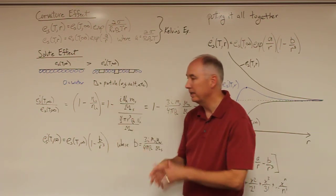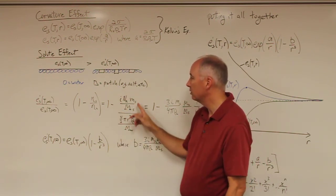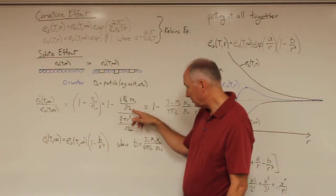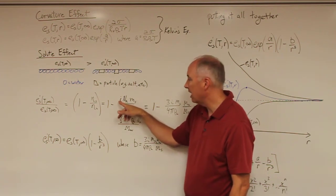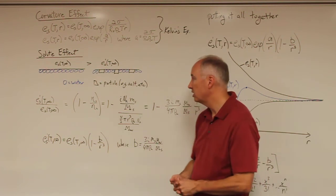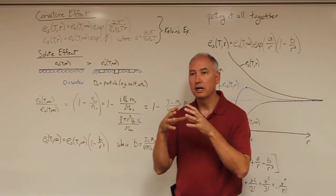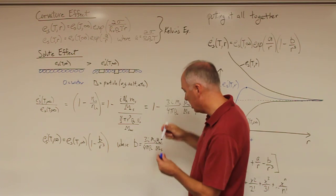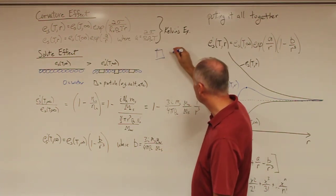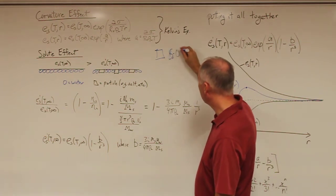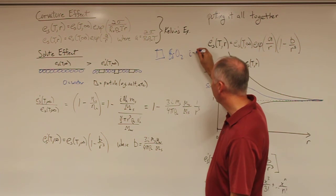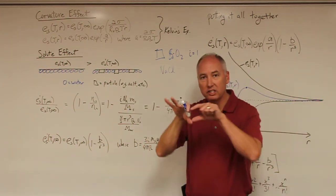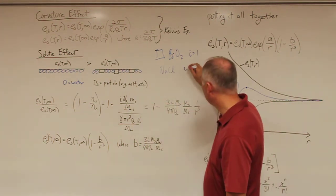If we want to expand that into something more useful, the number of molecules of the solute is equal to the mass of the solute divided by the molecular weight of the solute, times Avogadro's number, times i, where i is the Van't Hoff factor, which describes whether or not a given species is soluble. For example, if you have a silicon dioxide mineral dust particle, it's not water soluble, so it's going to have a Van't Hoff factor of 1. If you have sodium chloride, when you put that into water, it dissolves and will end up with a Van't Hoff factor of 2.